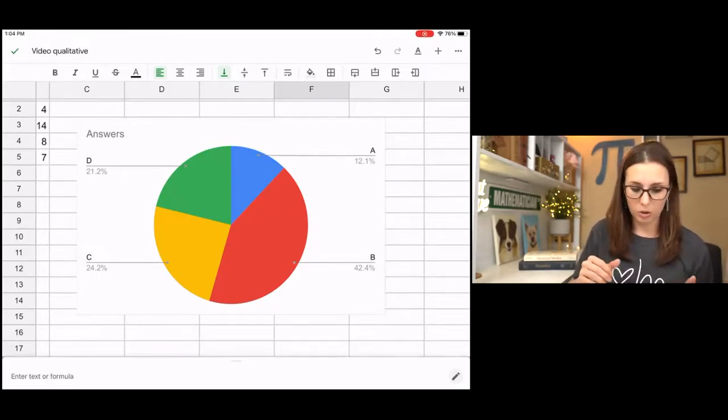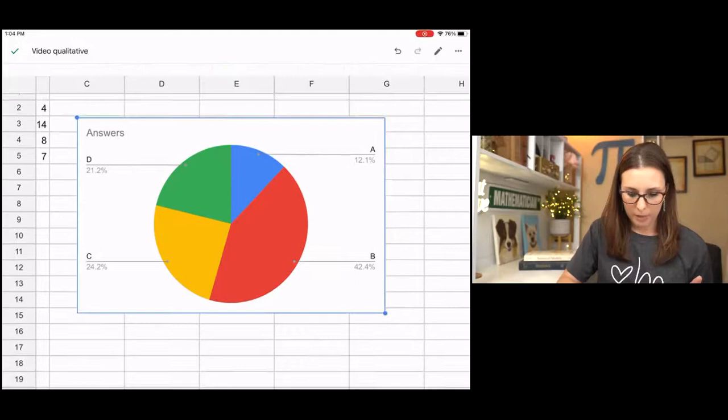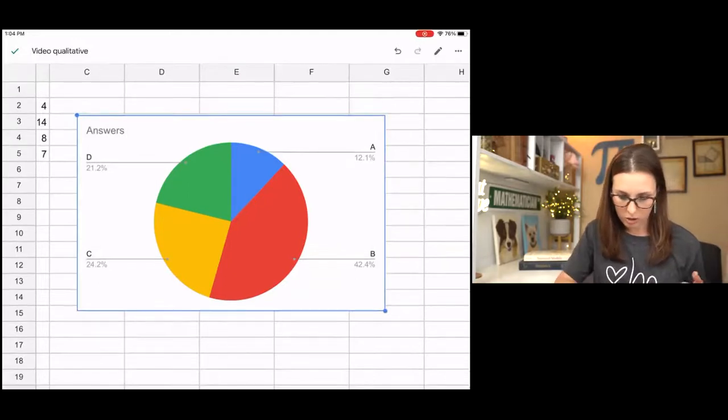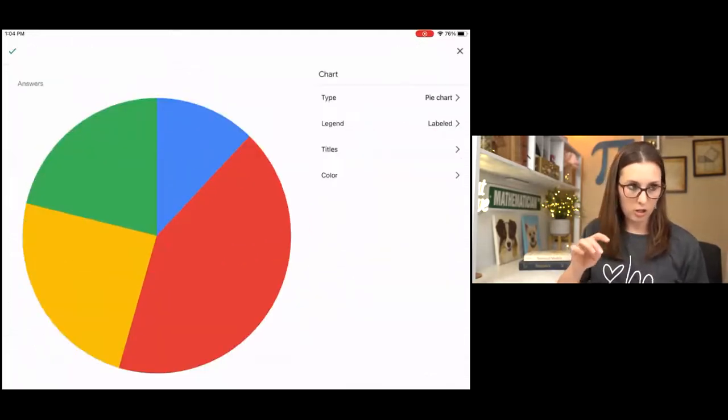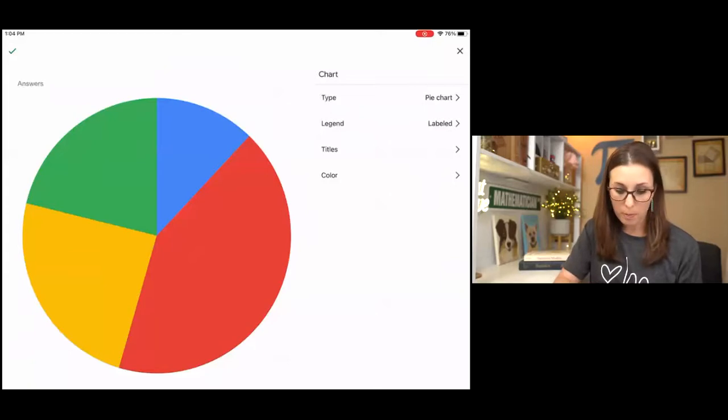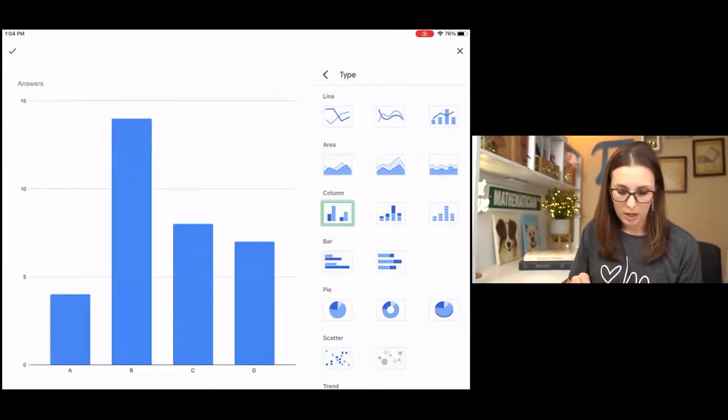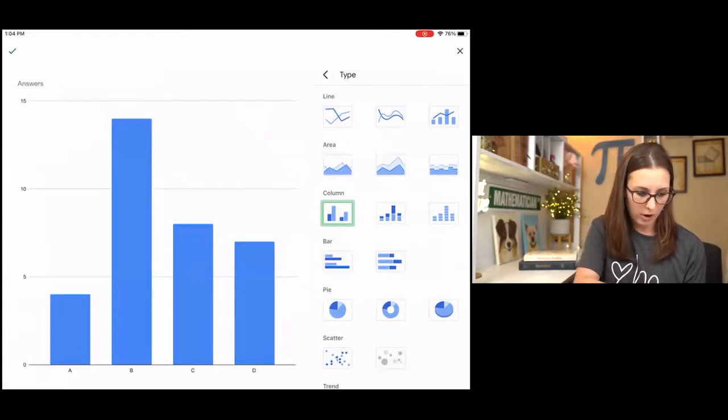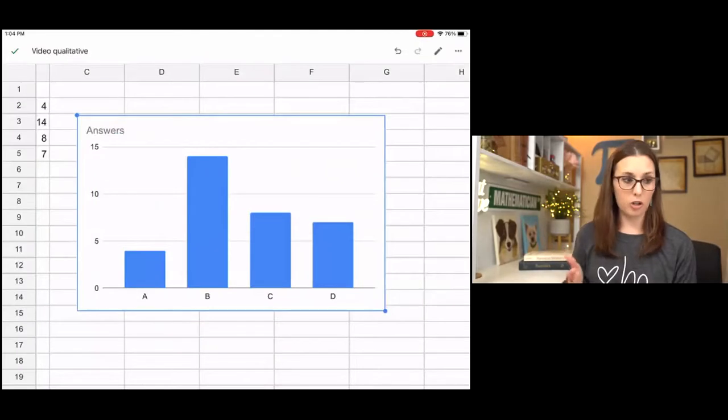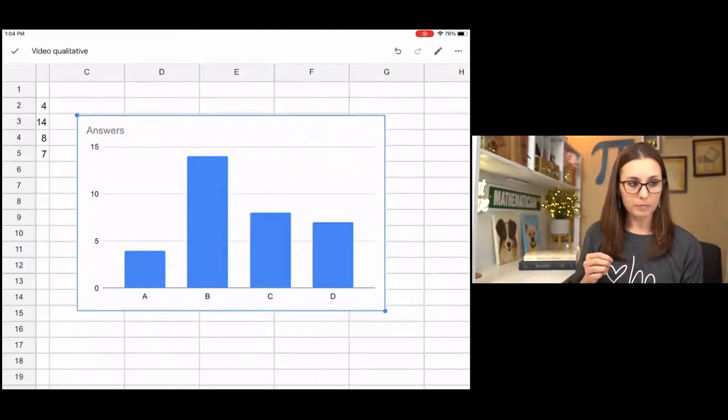And then you can also do, I'm going to edit this chart, edit chart. I'm going to change this to a bar chart because that's my next thing in the notes. And I'm going to do, they call it column, which is fine. And there's that. So now I've changed it to a bar chart.